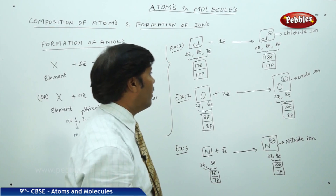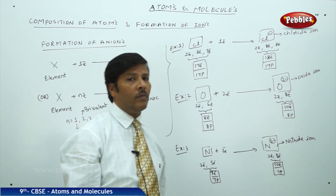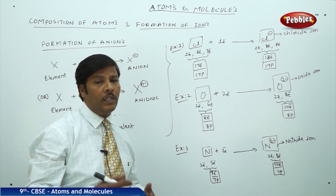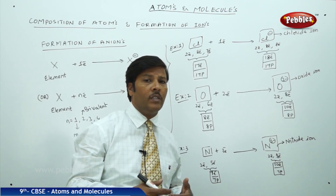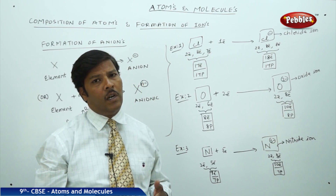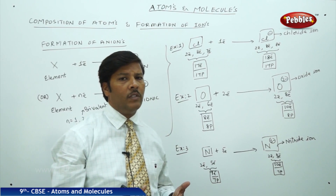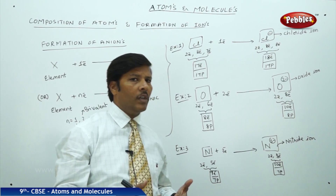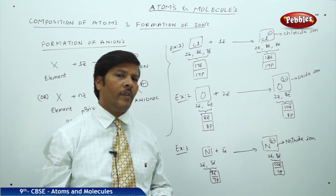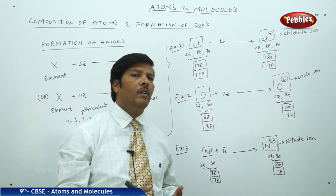In summary, formation of cations always involves acquiring positive charge, and formation of anions always involves acquiring negative charge. Cations are formed from the neutral element by loss of electrons, and anions are formed from the neutral element by gain of electrons.